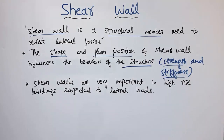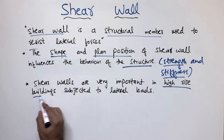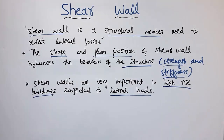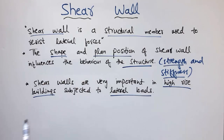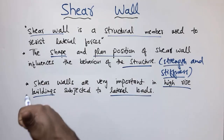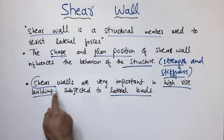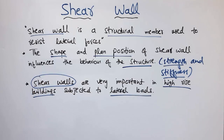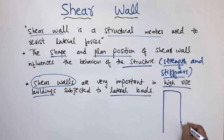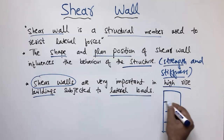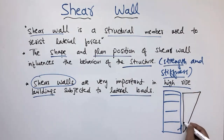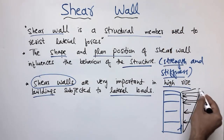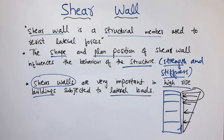Shear walls are very important in high-rise buildings subjected to lateral loads. As you increase the height of the building, it is more subjected to lateral loads because increasing height means more wind load acts on your building. With more stories, the wind load increases significantly. That is why it is important to design shear walls for high-rise buildings, as the load keeps increasing with building height.